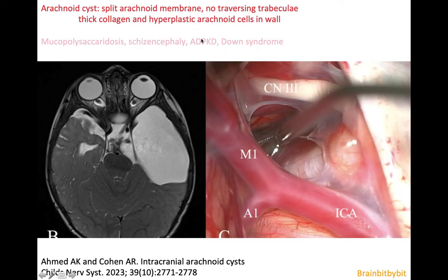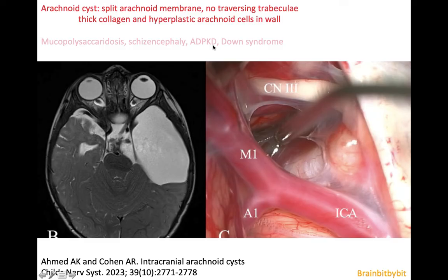The wall of an arachnoid cyst is made of hyperplastic arachnoid cells and sometimes thick collagen. Certain diseases have a higher incidence of arachnoid cysts: mucopolysaccharidosis makes sense because mucopolysaccharides were the ground substance of the endomeninges. Autosomal dominant polycystic kidney disease also makes some sense because it is a ciliopathy — if the cells do not know their location, they do not know where to form the trabeculae.